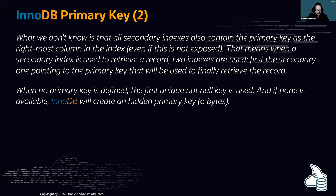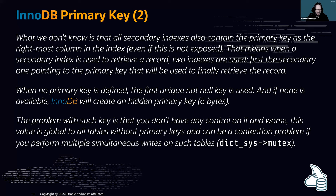When there is no primary key defined in an InnoDB table, the first unique NOT NULL key is used. If none is available, InnoDB creates a hidden 6-byte primary key you have no control over. This hidden key is global across all InnoDB tables that lack a primary key, meaning inserts into multiple tables cause mutex contention — visible as 'dict_sys mutex' in MySQL. You should always define a primary key; it's also mandatory for HA solutions.